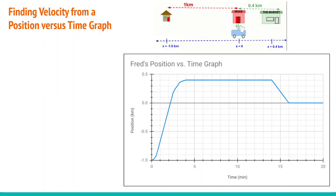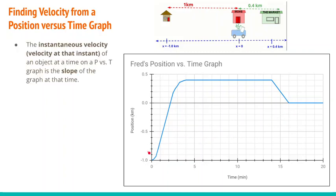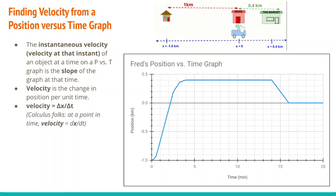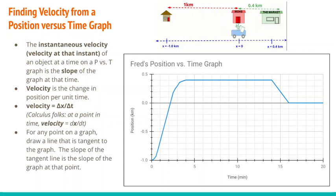We can also find velocity from a position versus time graph. Fred has different motion throughout, so we're looking at instantaneous velocity — the velocity at a particular instant. On this graph, it is the slope of the graph at that moment in time. The basic idea is that velocity is the change in position per unit time, which for those who have taken calculus is dx/dt. Delta x over delta t is equivalent to dx/dt. For any point on the graph, we find the velocity by drawing a line tangent to that point and finding the slope of that tangent.